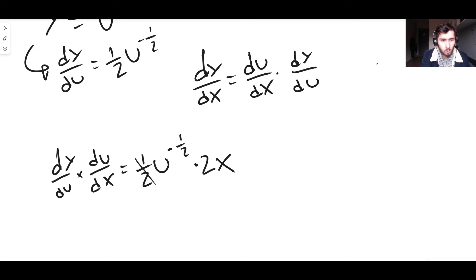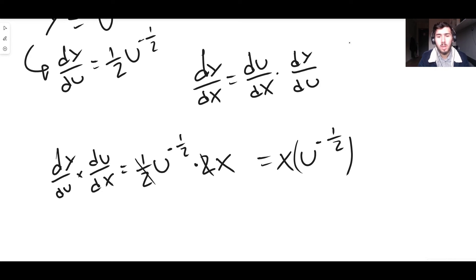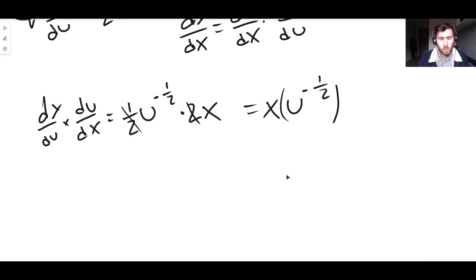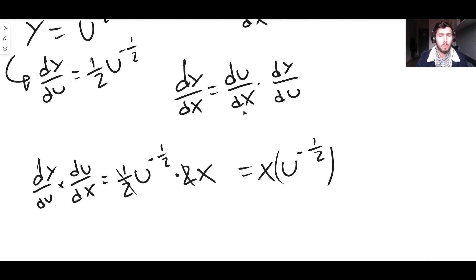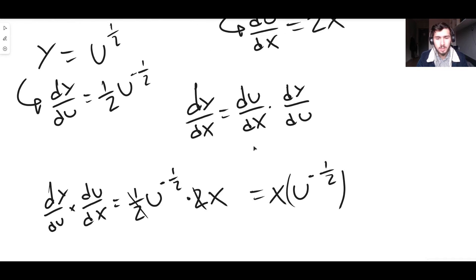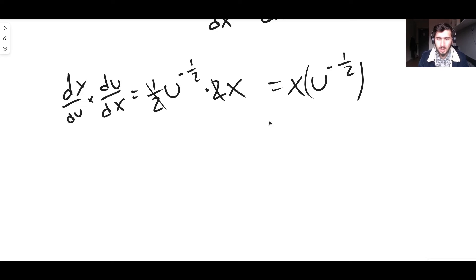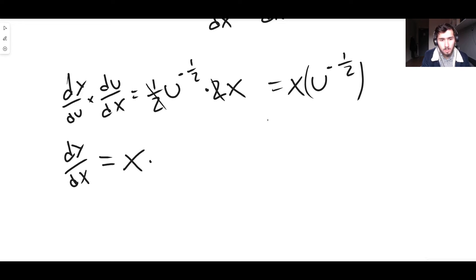We cancel the 1/2 and 2, giving x times u^(−1/2). But we don't want u in the answer since it wasn't in the original problem. So we substitute back: replace u with x². We have dy/dx = x times (x²)^(−1/2), which we can write as x times 1 over (x²)^(1/2), because a negative exponent means taking the reciprocal.